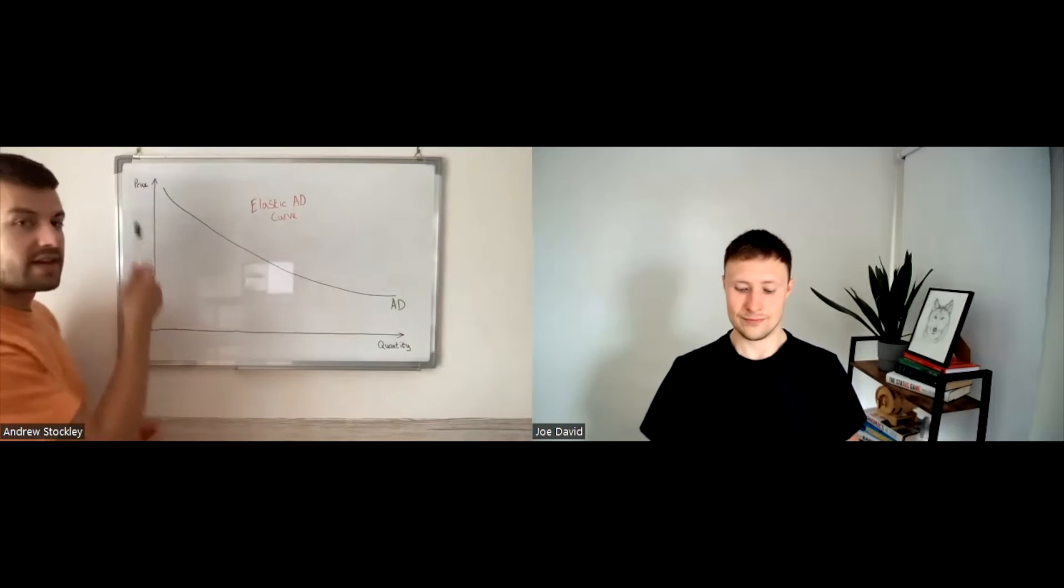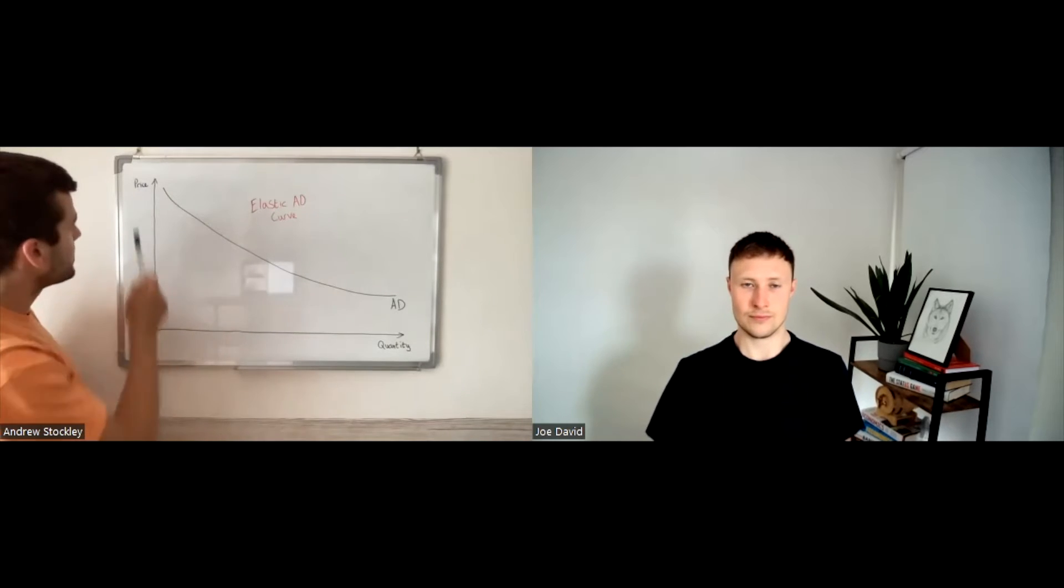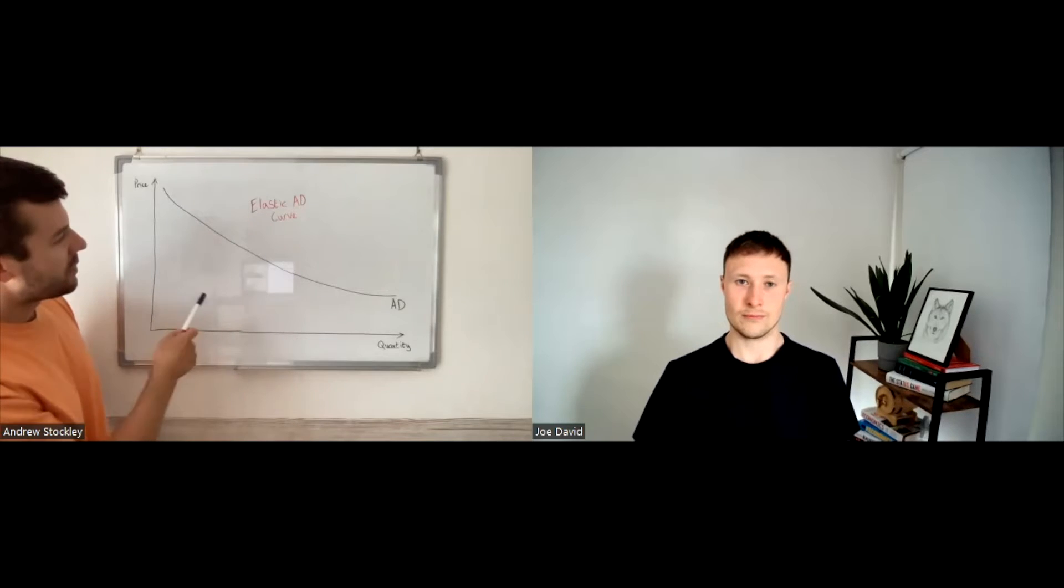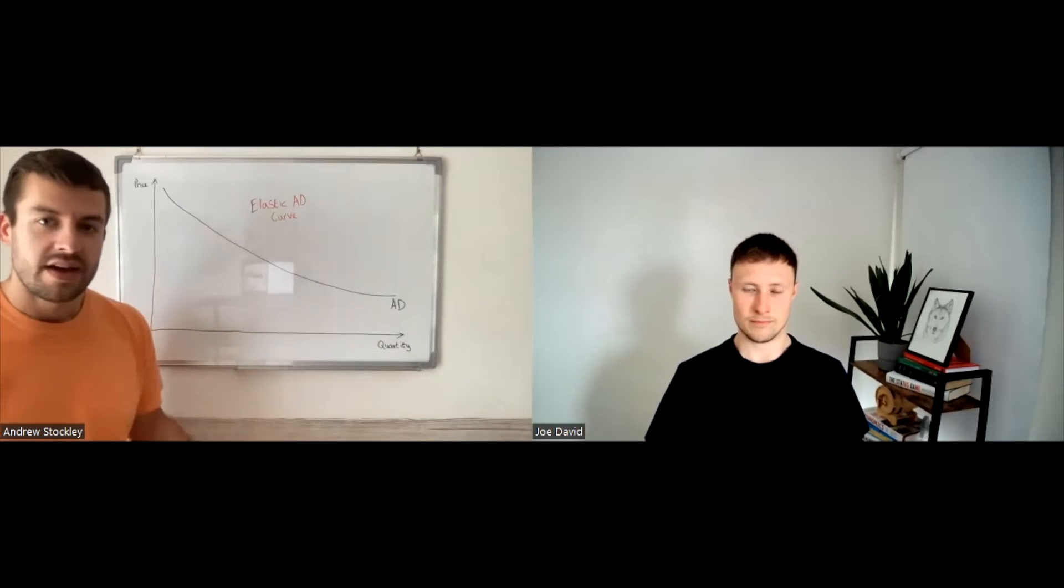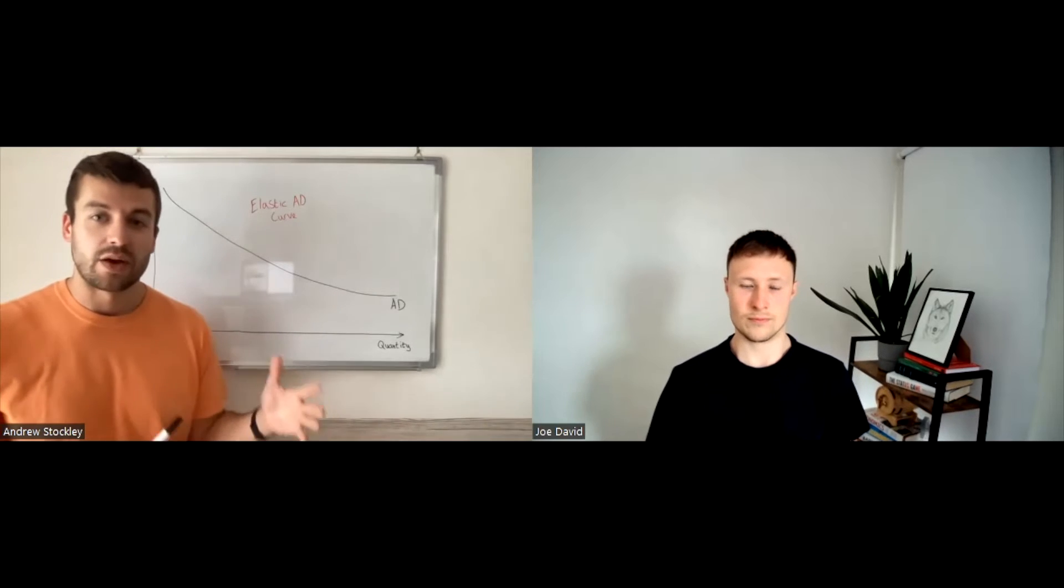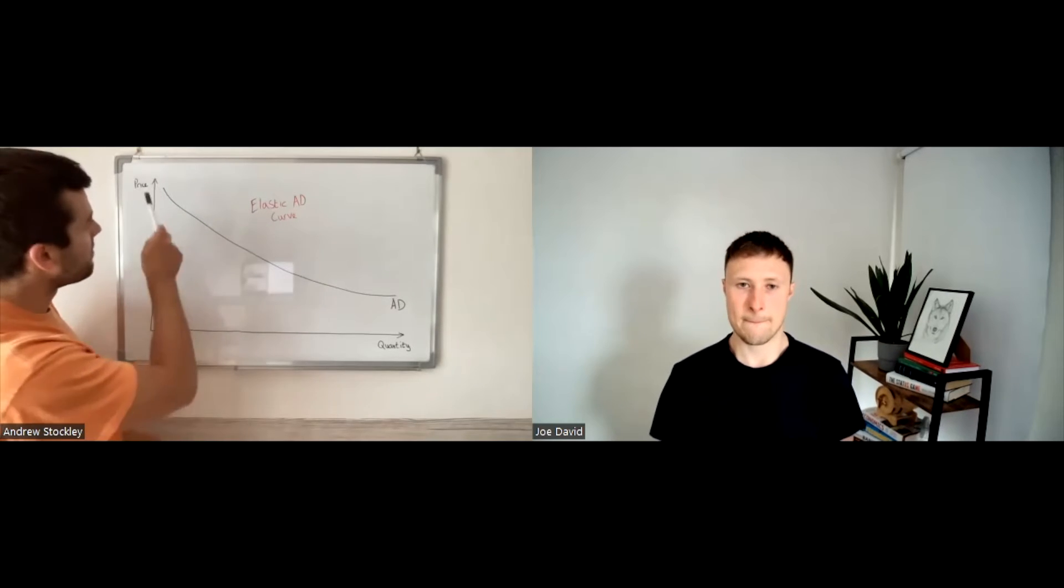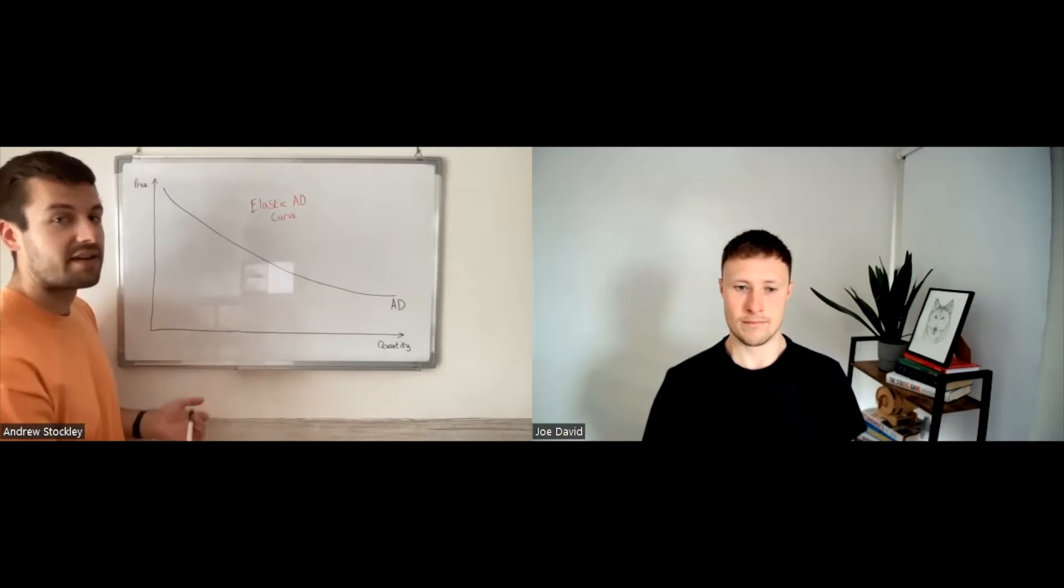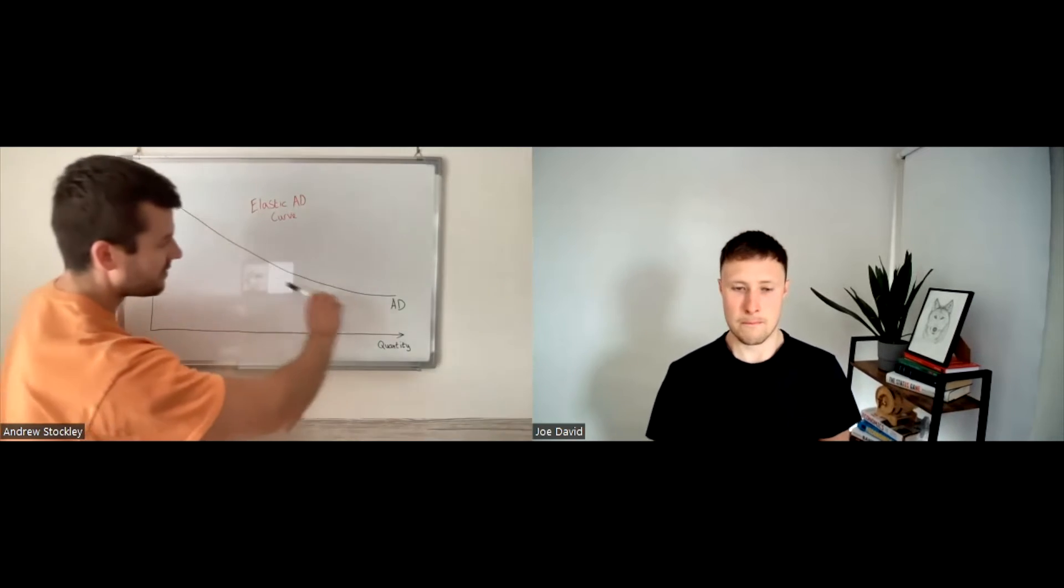So we've got the graph behind me. As usual, with a demand and supply graph, we've got price on the y-axis, quantity on the x-axis, and we've got one aggregate demand curve. And from this, we know that the income and substitution effects have been quite large because we can see a relatively elastic aggregate demand curve here, meaning it is relatively shallow.